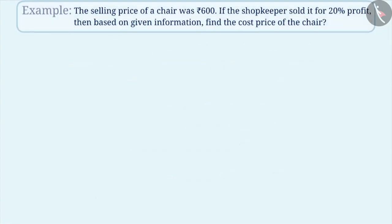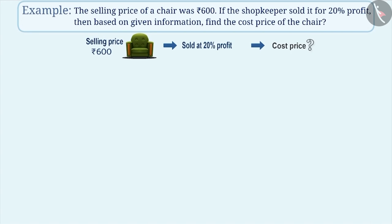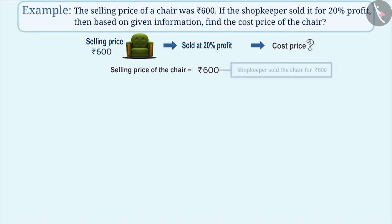Example 3: The selling price of a chair was Rs. 600. If the shopkeeper sold it for 20% profit, then based on the given information, find the cost price of the chair. Selling price of the chair is equal to Rs. 600. This selling price gave the shopkeeper a profit of 20%. We have to find the cost price, that is, the cost at which the shopkeeper purchased the chair.